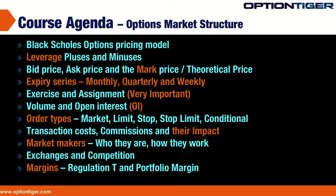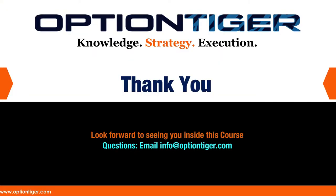In 1977 the CBOE introduced put options. It was around this time various computational models for the pricing of options were also introduced, and one of them was the Black Scholes formula, which has become the de facto standard of options pricing. In the next slide I'm going to show you what exactly this Black Scholes options pricing model is. It is a highly mathematical model.